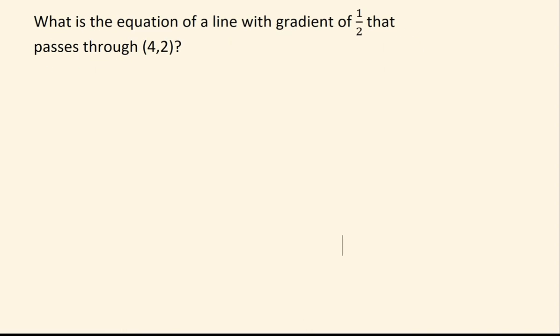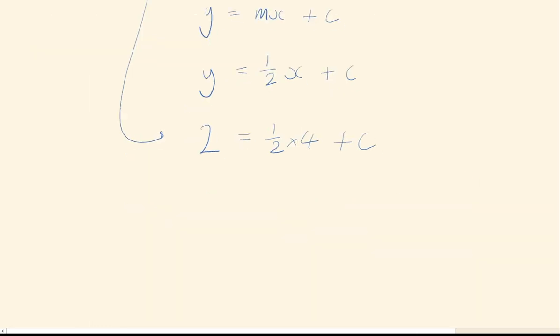Okay, same idea again. We have the formula, y equals mx plus c. We plug in what we know, which is the gradient. Which gives me this form, and now I'm going to plug in this coordinate. Again, the x-coordinate always comes first. So x is 4 and y is 2.